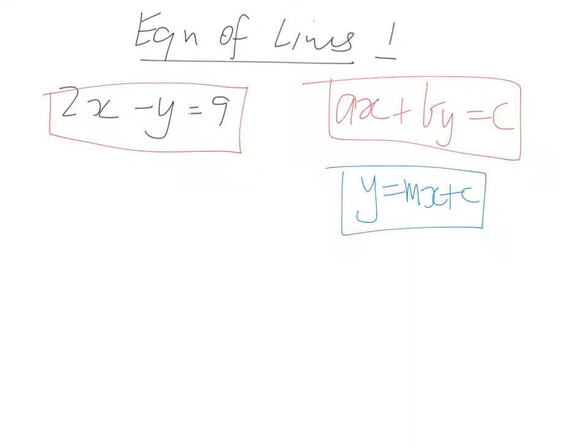That's what we want it written as, because then we can find the gradient, which is m, and the y-intercept, which is our value of c. And that's the first thing you get asked to do in these questions.